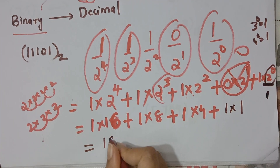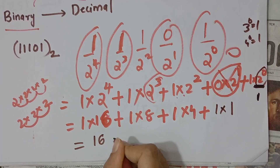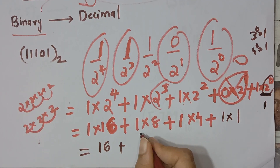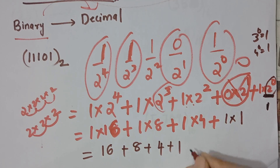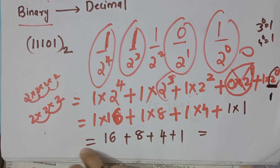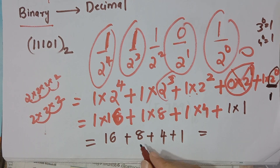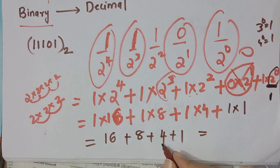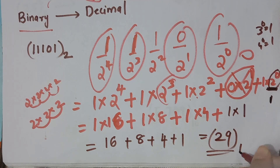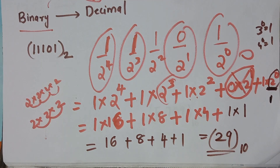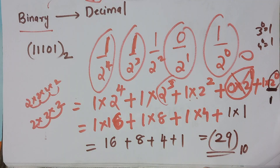So: 1 into 16 is 16, plus 1 into 8 is 8, plus 1 into 4 is 4, plus 1 into 1 is 1. 16 plus 8 is 24, plus 4 is 28, plus 1 is 29. This is our decimal value. 29 base 10 is our result — the binary number has been converted to decimal.